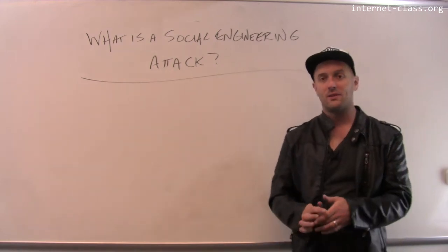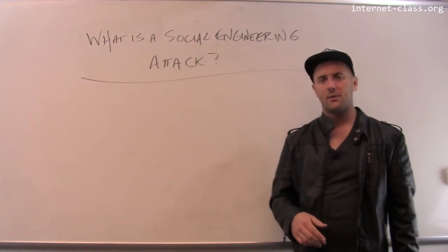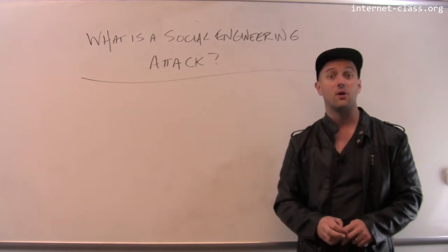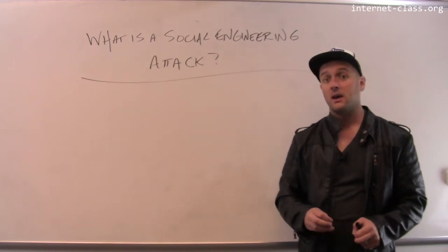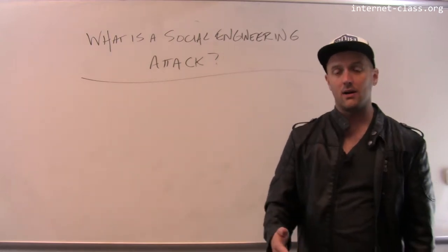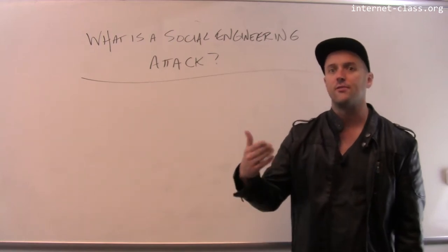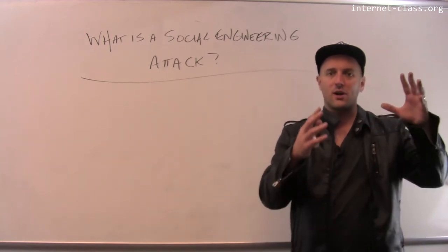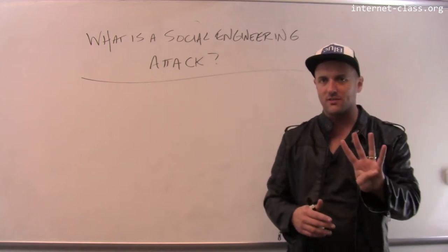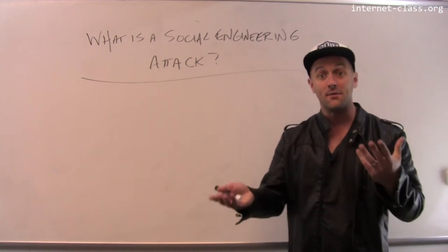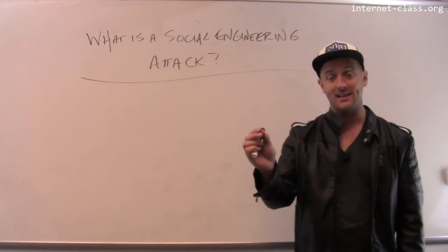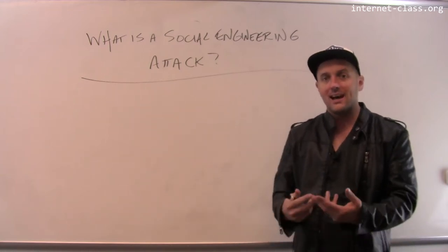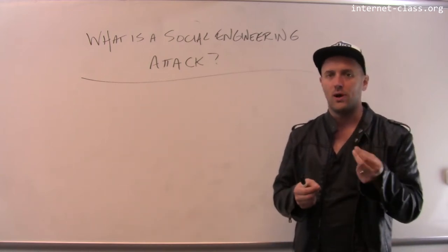So you could call up the first site, ask to check your transactions, and they would tell you the last four digits of the card used — digits they think are safe to give away. Then you call the second company, provide that information, and now that person has reason to think you are who you claim to be. You're combining two pieces of information from two different sources to impersonate someone.